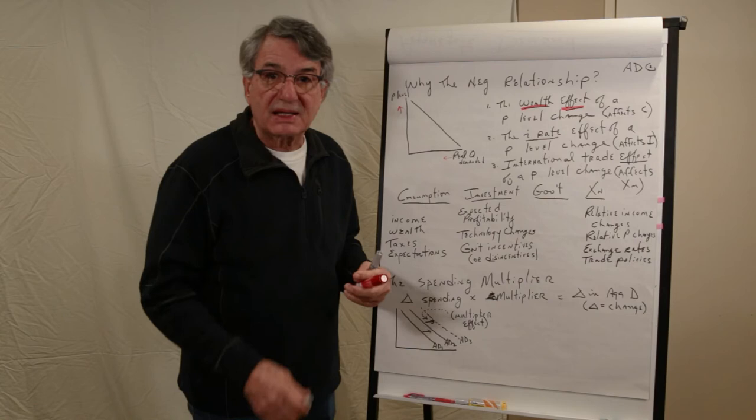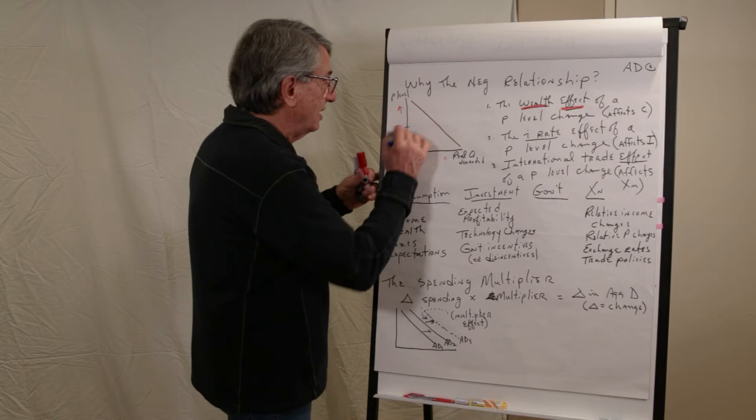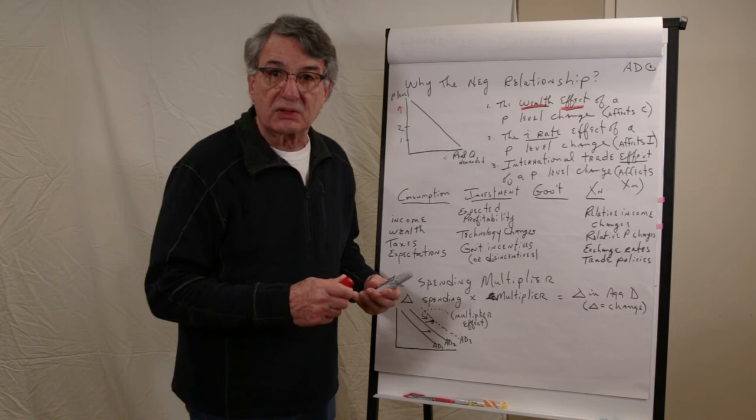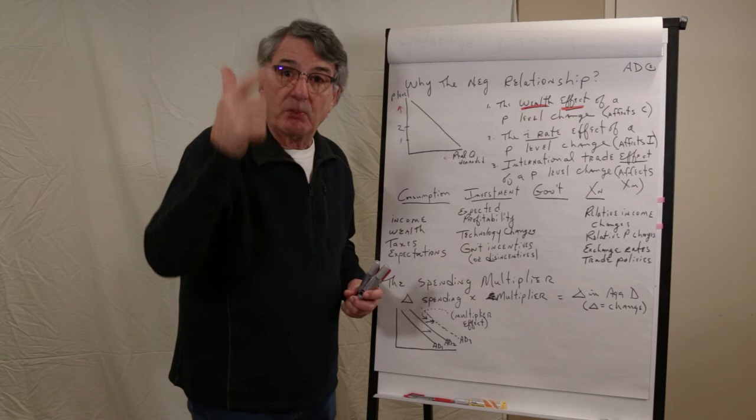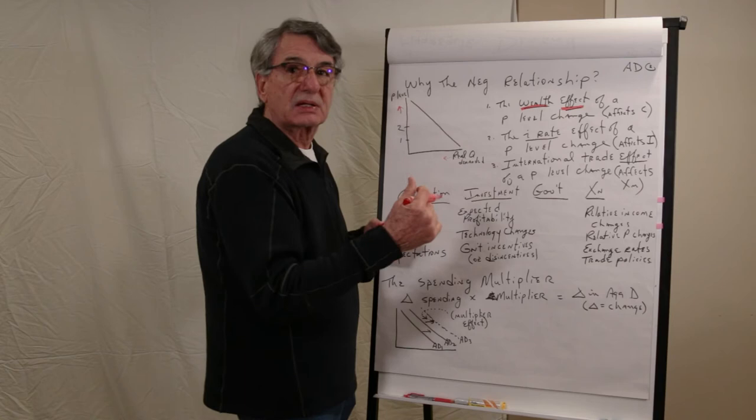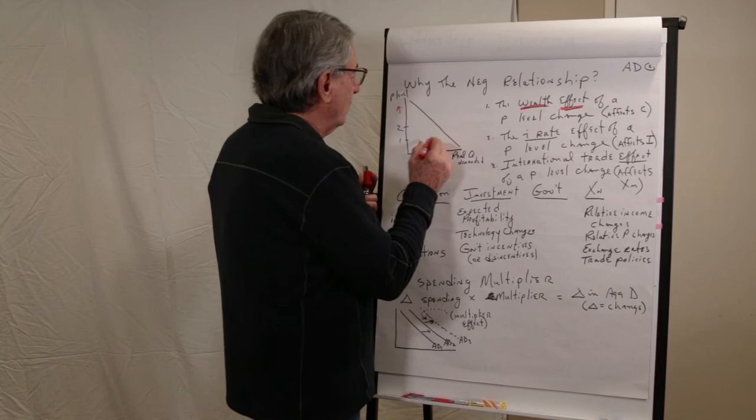If the price level doubles, if the price level goes from one to two here, then the purchasing power of that $500,000 has been reduced to $250,000. And so if the price level goes up, the purchasing power of a fixed amount of money goes down. That would be the case with anything like cash, bonds, money stuck in a safe deposit box somewhere. And so when the price level goes up, people will cut back on their purchases because their real wealth has decreased because of the price level increase. That's the first reason why.